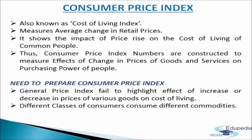Consider the statement that the CPI for industrial workers, with 1982 as base i.e. 100, is 526 in January 2005. This means that if the industrial worker was spending Rs. 100 in 1982 for a typical basket of commodities, he needs Rs. 526 in January 2005 to buy an identical basket of commodities. It is not necessary that he or she buys the basket; what is important is whether he or she has the capability to buy it.